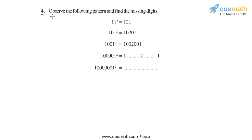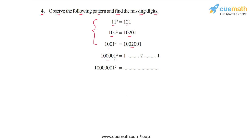In question 4, the problem statement says: observe the following pattern and find the missing digits. We are given that 11² = 121, 101² = 10201, 1001² = 1002001, and then using the pattern in the first three squares, we have to find the square of 100001 (1 followed by four zeros and then 1).